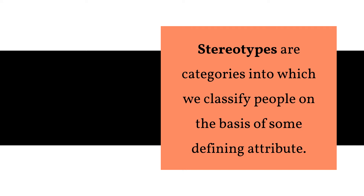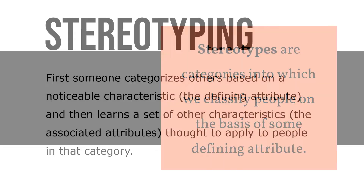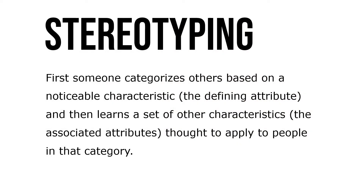Stereotypes are categories into which people classify one another on the basis of some defining attribute. First, someone categorizes others based on a noticeable characteristic — the defining attribute — and then learns a set of other characteristics, the associated attributes, thought to apply to people in that category.